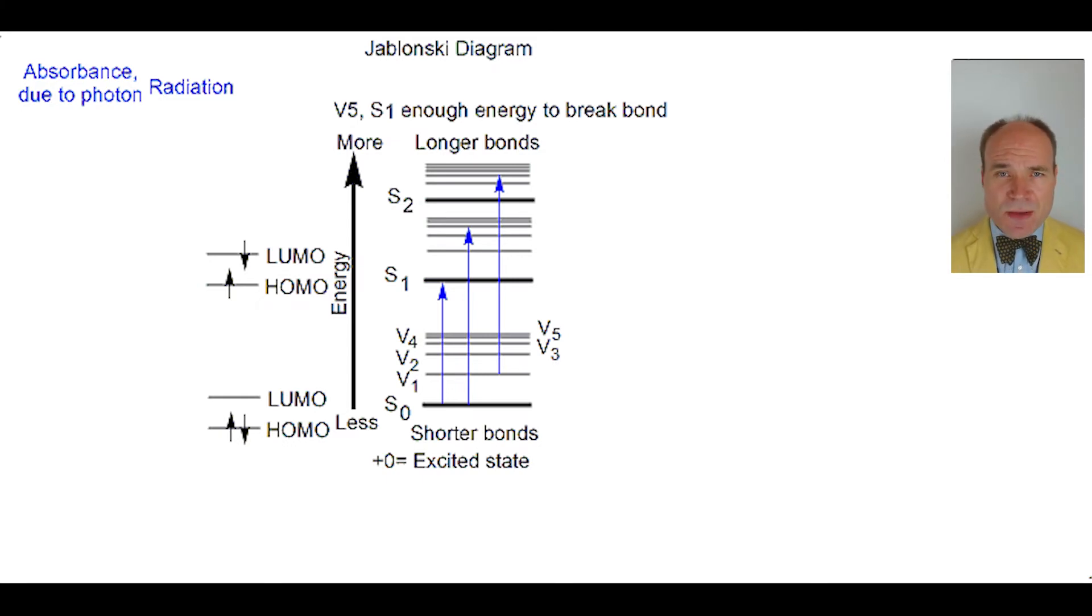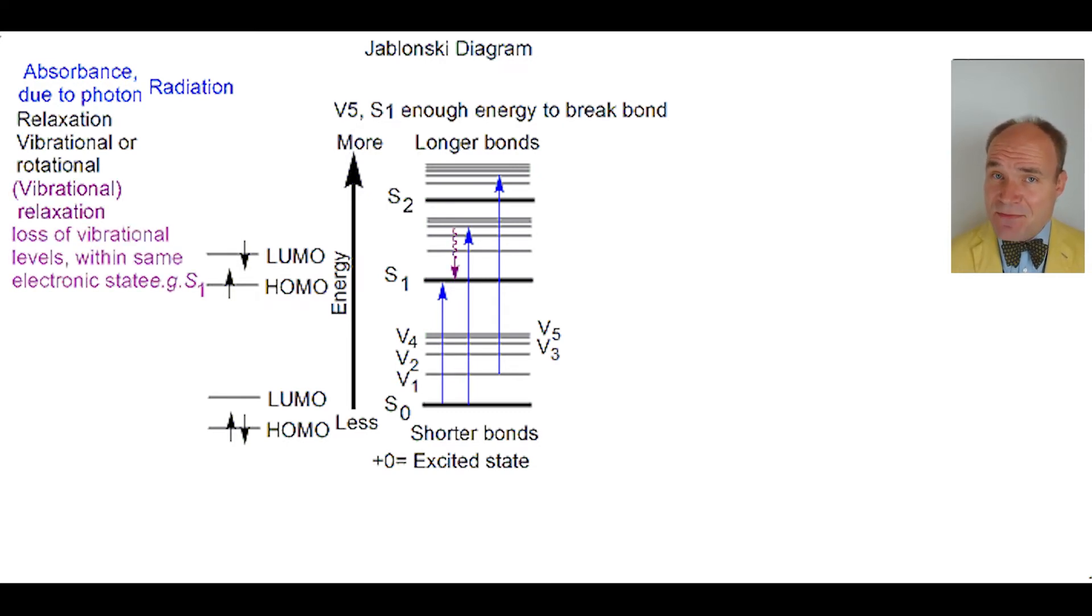there are a number of methods by which the electron can lose energy. Energy is lost through non-radiative relaxation of vibrational or rotational energies within the same energy state, for example, S1.